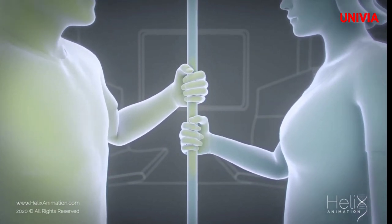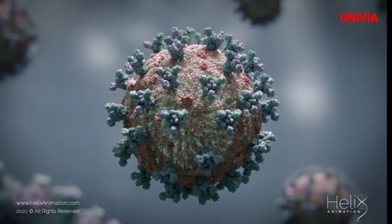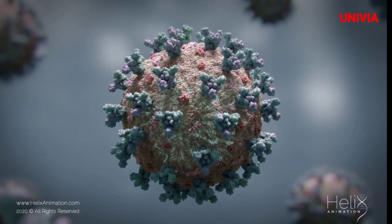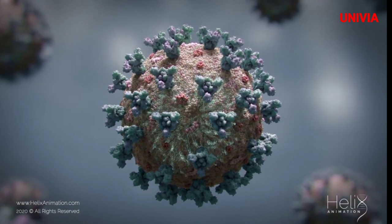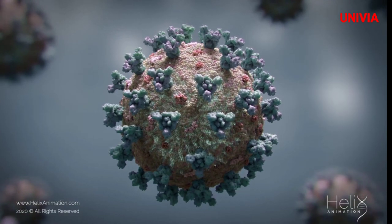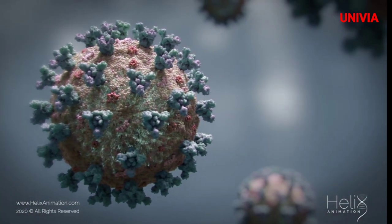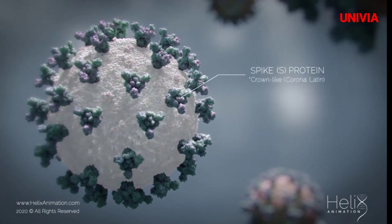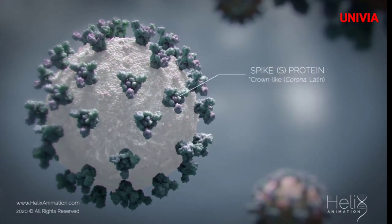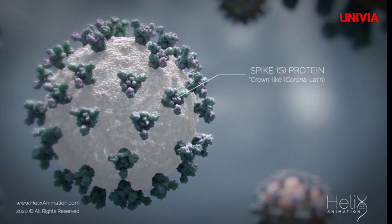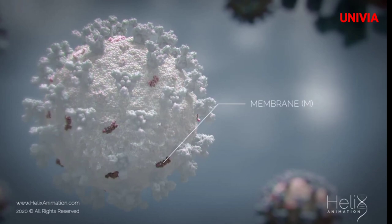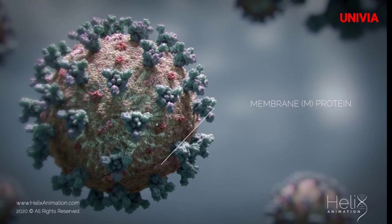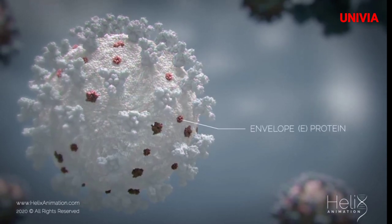What we know so far: the coronavirus is spherical in shape and its genetic material is encapsulated by different types of proteins. Some of the key structural ones are the Spike S protein — the most prominent feature of coronaviruses, from where they get their name — then the M or membrane protein, and the so-called envelope protein.